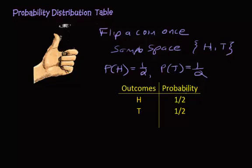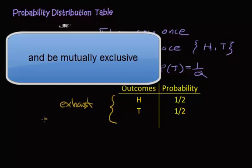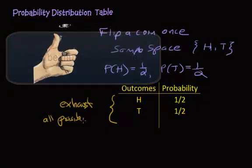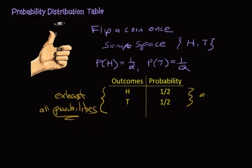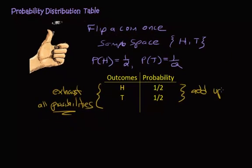You have your outcomes on the left and the probabilities on the right. Two things about probability distributions: on the left-hand side, your outcomes have to exhaust all possibilities — meaning it has to include every possible outcome. If we're talking about flipping a coin, you can't just write heads and ignore tails. And your probabilities have to add up to one, which one-half plus one-half does.